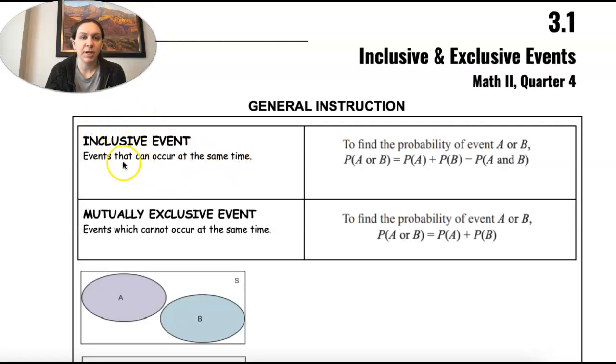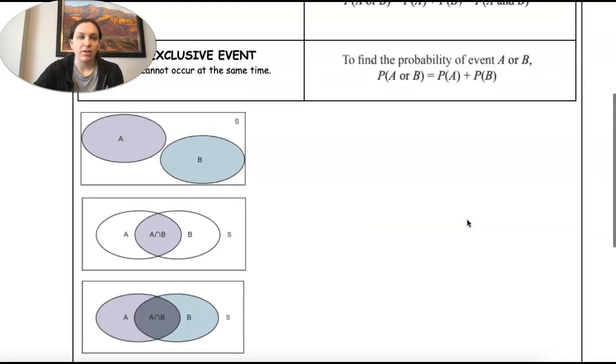We have inclusive right here, events that can occur at the same time, and we have this formula. Then mutually exclusive is events that cannot occur at the same time, and we have another formula. Then we have some Venn diagrams.